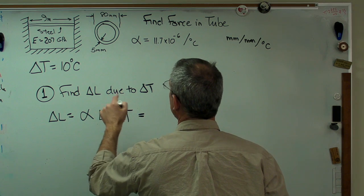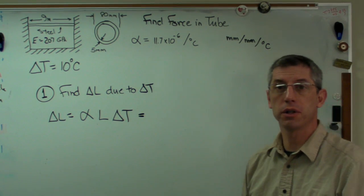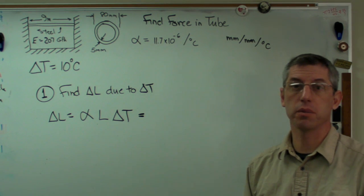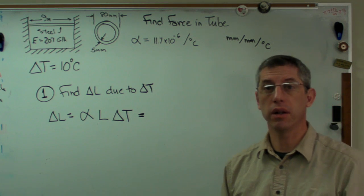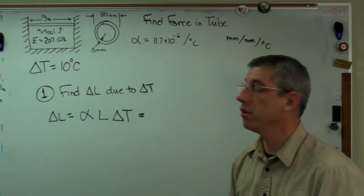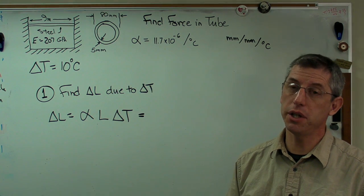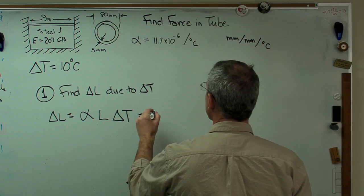The coefficient of thermal expansion for steel is 11.7 times 10 to the minus 6 per degree C. So it's a really small number. The changes in length are not going to be very big. This is on the order of a millimeter. It's not very much, but it's going to generate a surprisingly large force, perhaps. So let's go ahead and work this out.